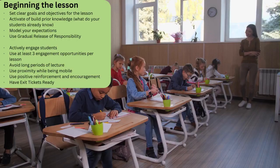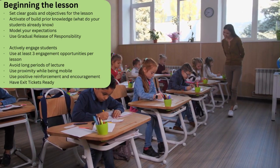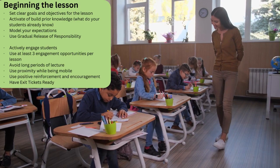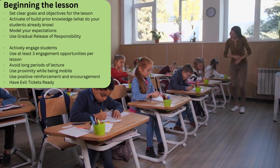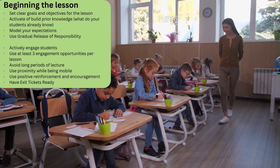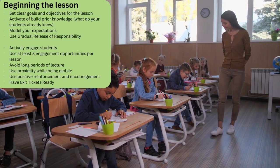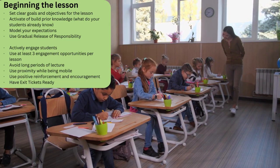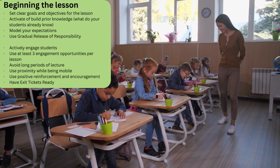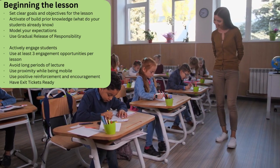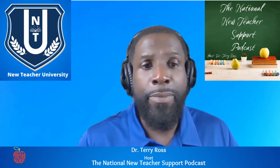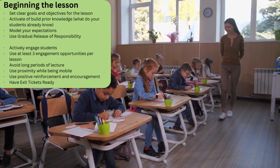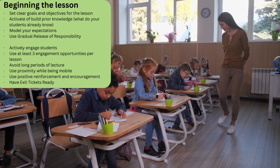So now let's look at beginning the lesson. Set clear goals and objectives for the lesson. In the district that I'm in, teachers have to read the PBO first and then go through the PBO with the students and lift all of the vocabulary and things like that. So do you have your objectives ready for the lesson? Activate or build prior knowledge — what do your students already know? Model your expectations. Use the gradual release of responsibility — go through the I do, the we do, the we do in pairs, and the you do. Actively engage your students. Use at least three engagement opportunities for lessons. Avoid long periods of lecture — make sure you break that up with some type of engagement activity.